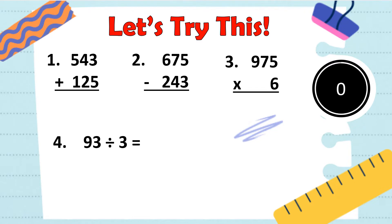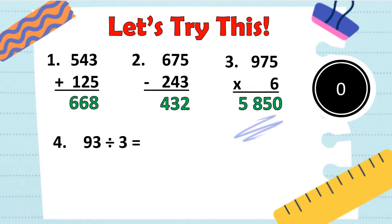Now, let's see if your answer is correct. Number 1: 543 plus 125 is equal to? Correct! It's 668. Number 2: 675 minus 243 — the answer is 432. Number 3: 975 times 6 is equal to? Correct! It is 5,850. Number 4: 93 divided by 3 is 31. Good job, kids!